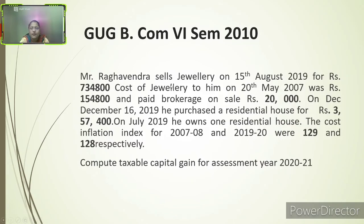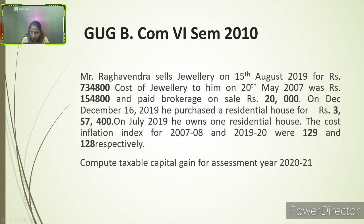Problem 3: Mr. Raga Vendor sells jewelry on 15th August 2019 for rupees 7,34,800. Cost of jewelry on 20th May 2007 was rupees 1,54,800. He paid brokerage on sale of rupees 20,000. On 16th December 2019 he purchased a residential house for rupees 3,57,400. In July 2019 he owned one residential house. Cost inflation indices: 2007-08 = 129; 2019-20 = 289. Compute taxable capital gain for assessment year 2020-21.